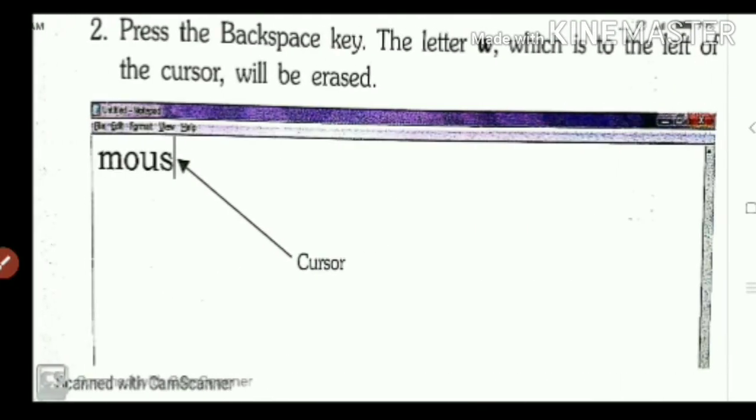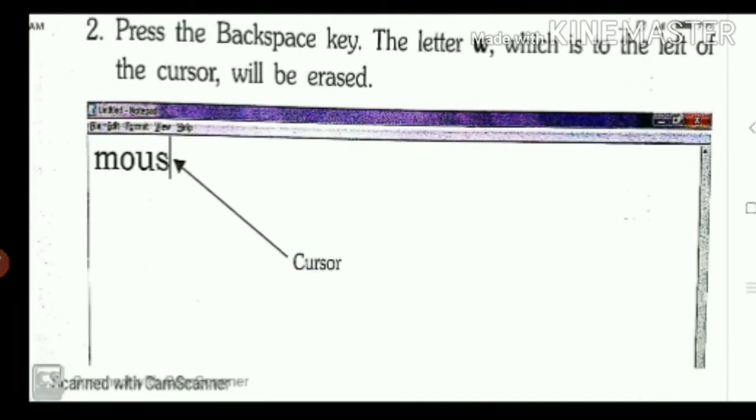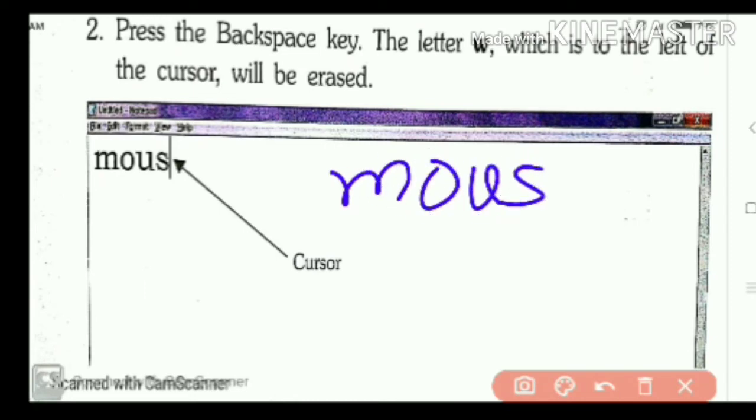See now second step. Press the backspace key. Through the keyboard, you will press the backspace key. Then M-O-U-S. W is erased. It came to the S. Cursor came here. The letter W, which is to the left of the cursor, will be erased. It was to the left of the cursor. So, W is erased here.